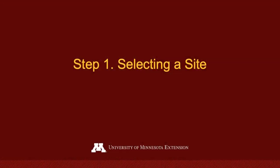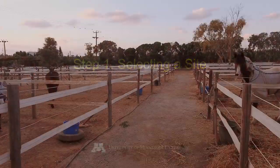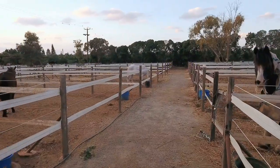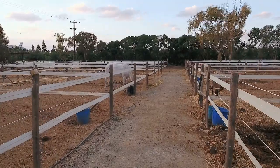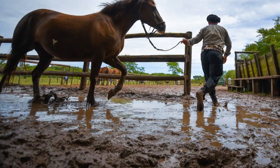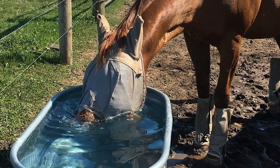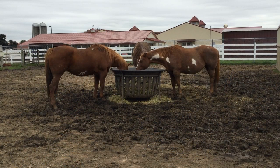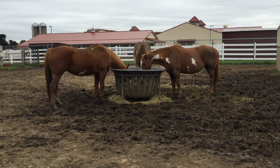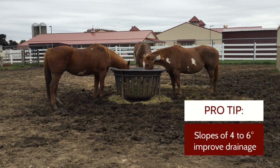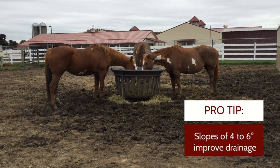The first step to installing a high traffic pad is to select where it is most needed. Common areas on the farm that may benefit include gates, laneways, where water sources are located, as well as where feeding stations are located. Each of these areas can be found within your dry lot. Sites should ideally slope between 4 and 6 degrees to improve drainage, and steeper slopes may require reinforcement to maintain integrity.